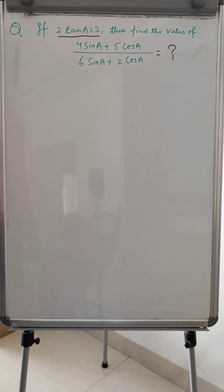If 2 tan A is equal to 3, then find the value of 4 sin A plus 5 cos A divided by 6 sin A plus 2 cos A. So we have 2 tan A is equal to 3. This is what is given from the problem.